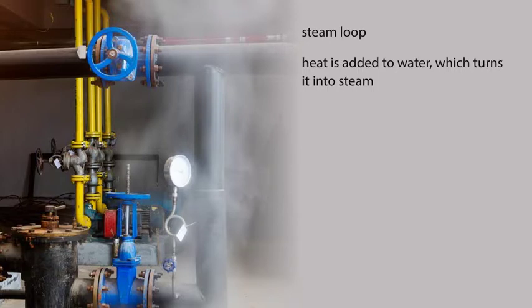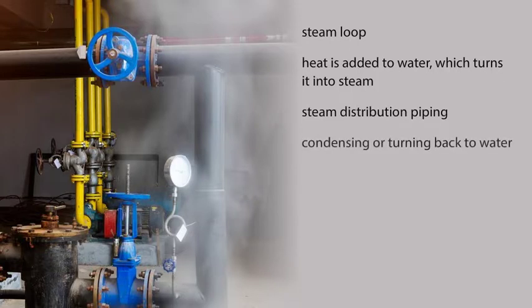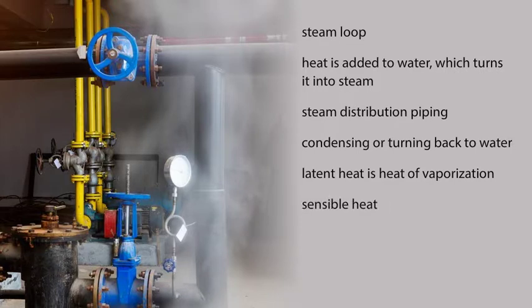Steam is transported to the load by the steam distribution piping, where it gives up its latent heat by condensing or turning back to water. Latent heat is the heat of vaporization, as opposed to sensible heat, which is the heat that can be sensed from a temperature loss.